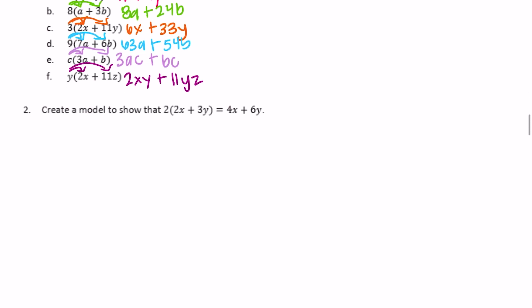Number two: create a model to show 2 times (2x + 3y) is equal to 4x + 6y. Okay, so let's do 2 times (2x + 3y) first. So we have two groups of 2x + 3y, and then I have another group of 2x + 3y.